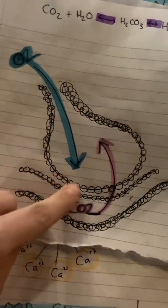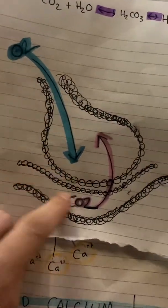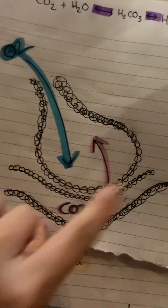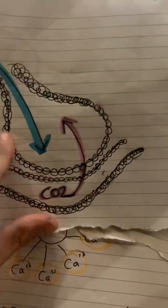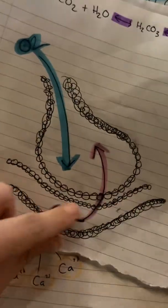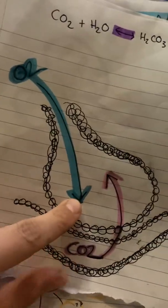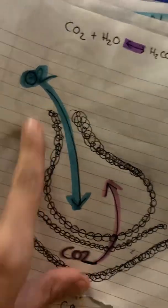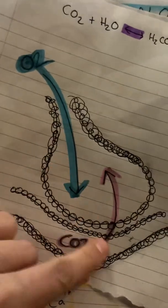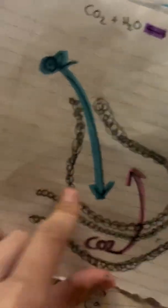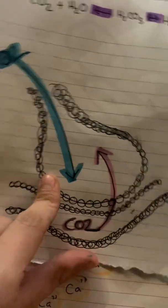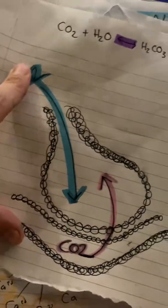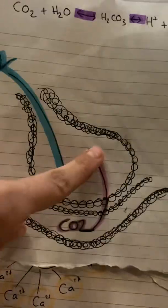Alright — alveolar, pulmonary artery, the little capillary. So normally when you breathe in, oxygen goes in and carbon dioxide comes out. This is the diffusion that happens across the alveolar membrane. Normally oxygen comes in and carbon dioxide goes out.